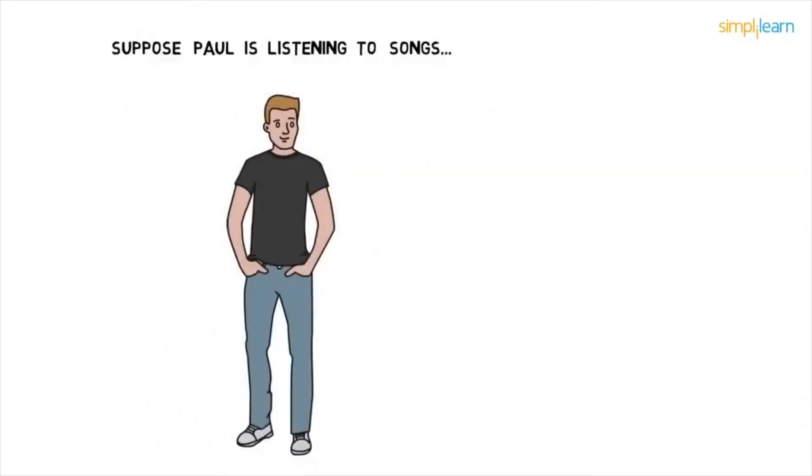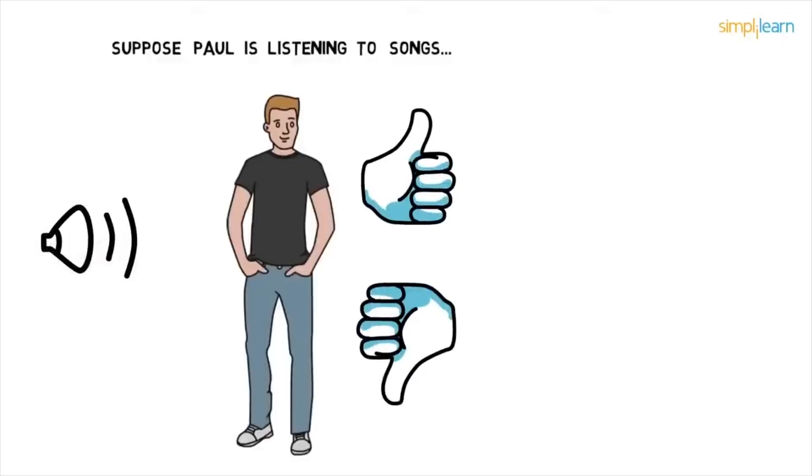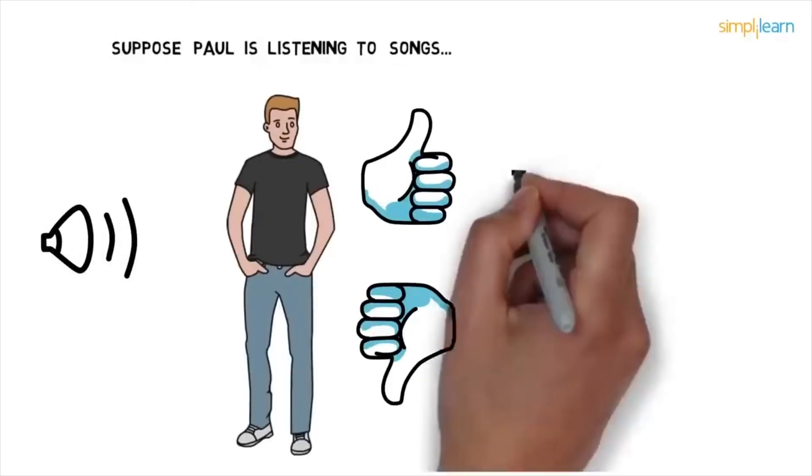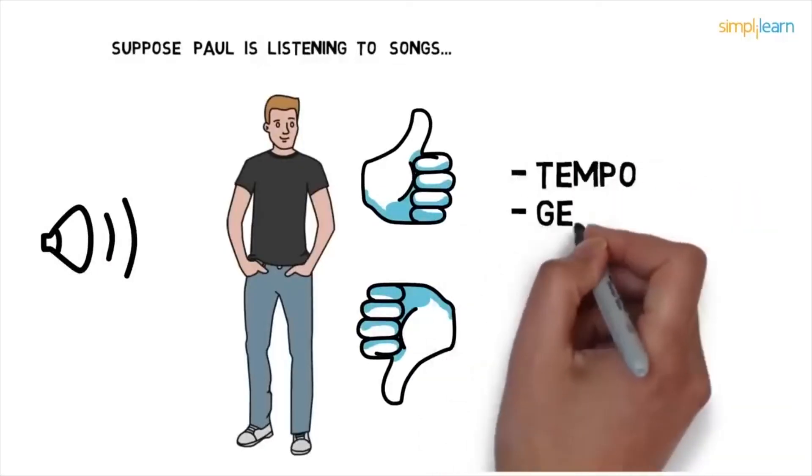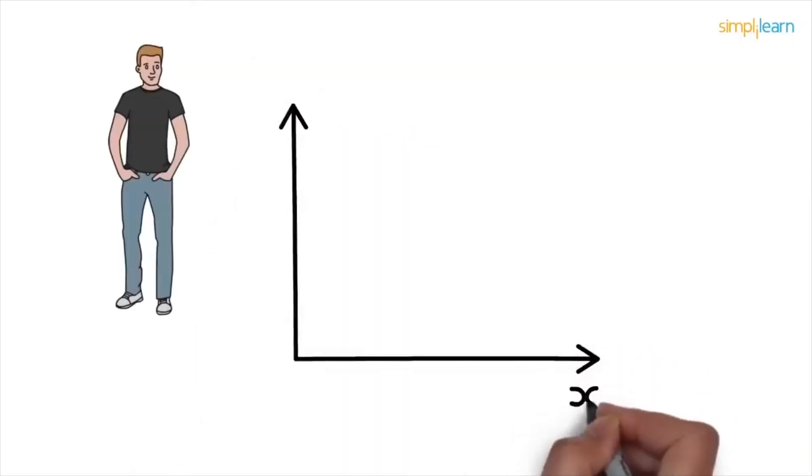So that's Paul. He loves listening to new songs. He either likes them or dislikes them. Paul decides this on the basis of the song's tempo, genre, intensity and the gender of voice. For simplicity, let's just use tempo and intensity for now.